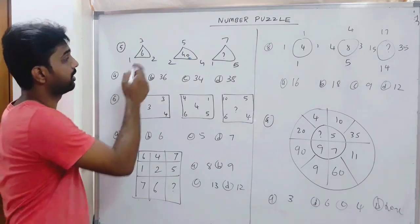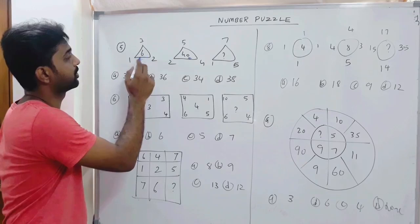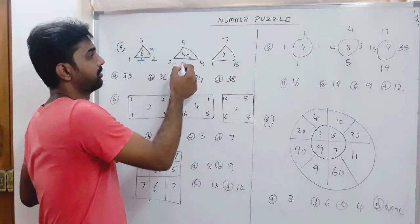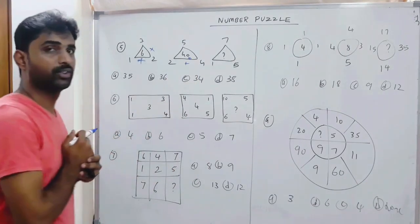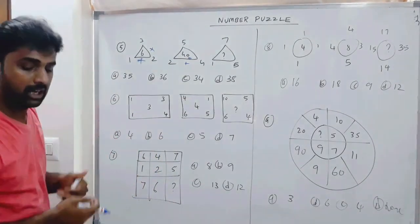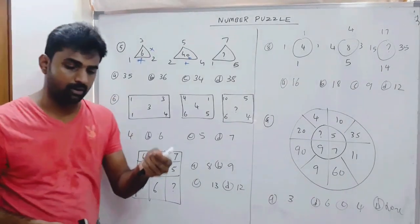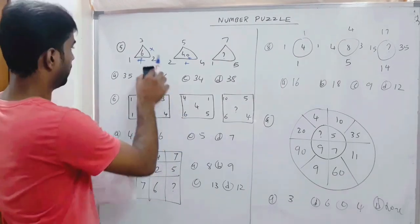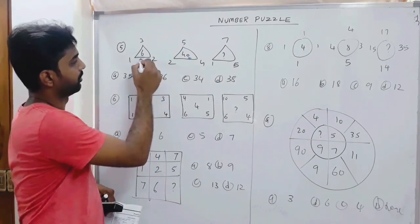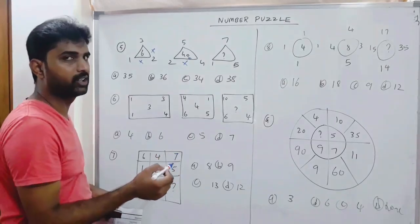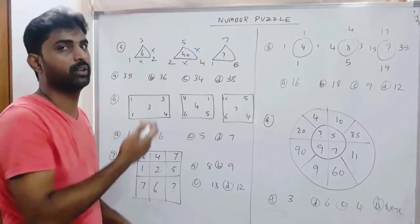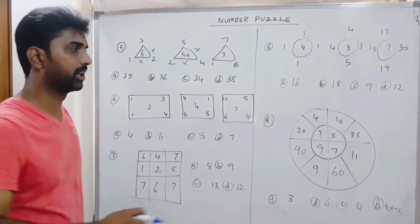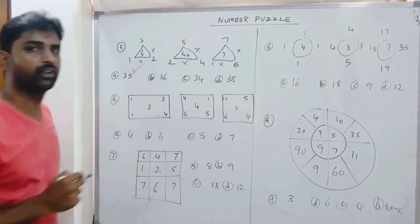Let us see: 2 + 4 = 6, 6 × 5 = 30. But you have to apply multiplication logic. So: 1 × 2 = 2, 2 × 3 = 6, 2 × 4 = 8, 4 × 5 = 20, 8 × 5 = 40. It is following a multiplication series. So 1 × 5 = 5, 5 × 7 = 35. So 35 is the answer.